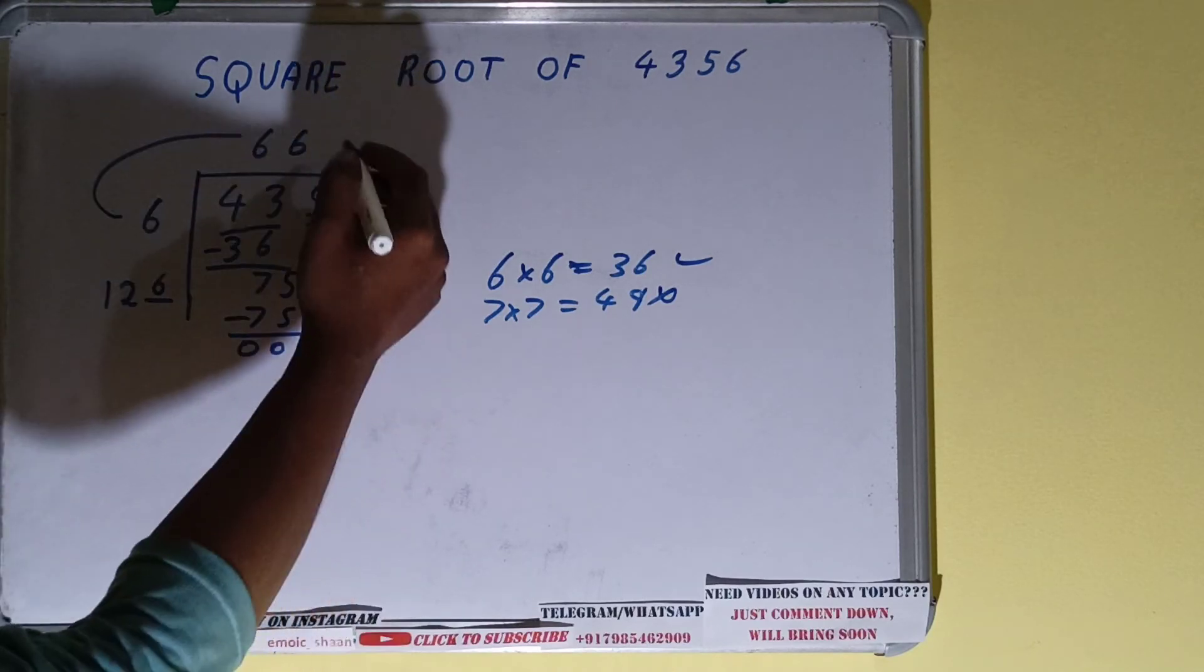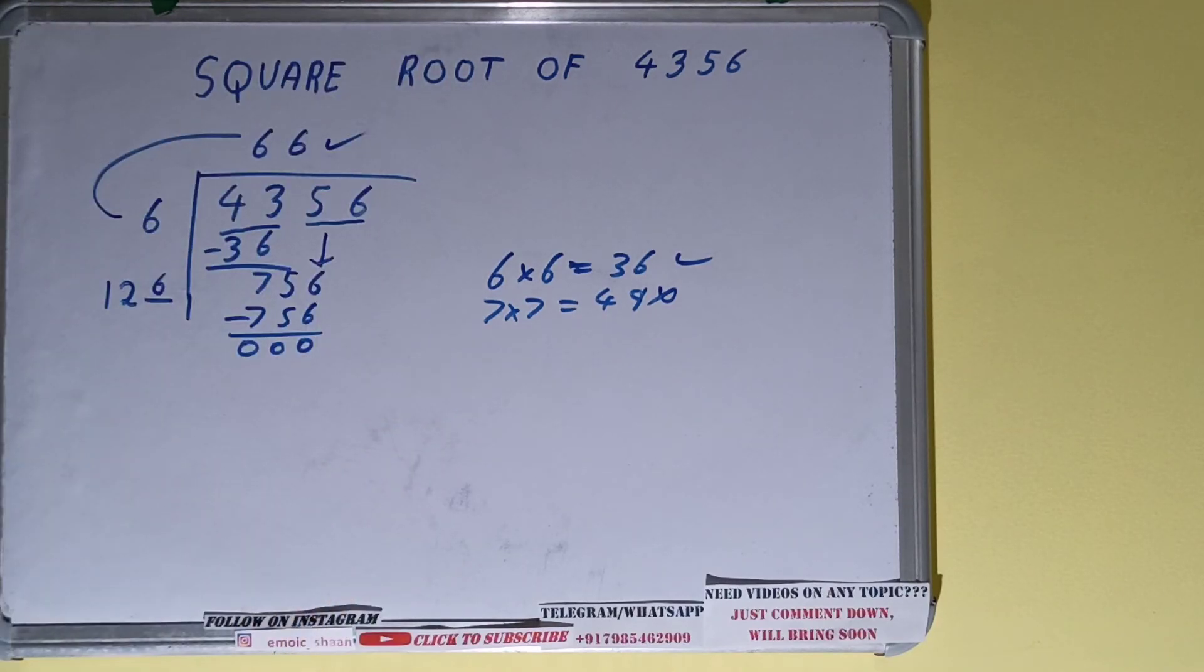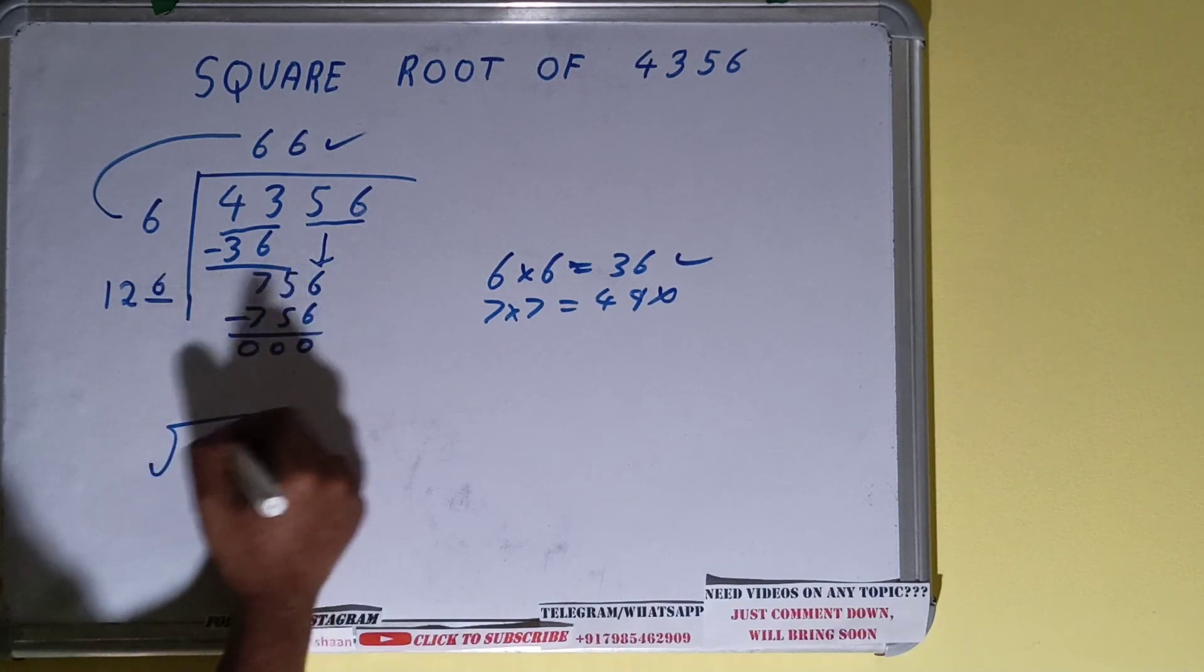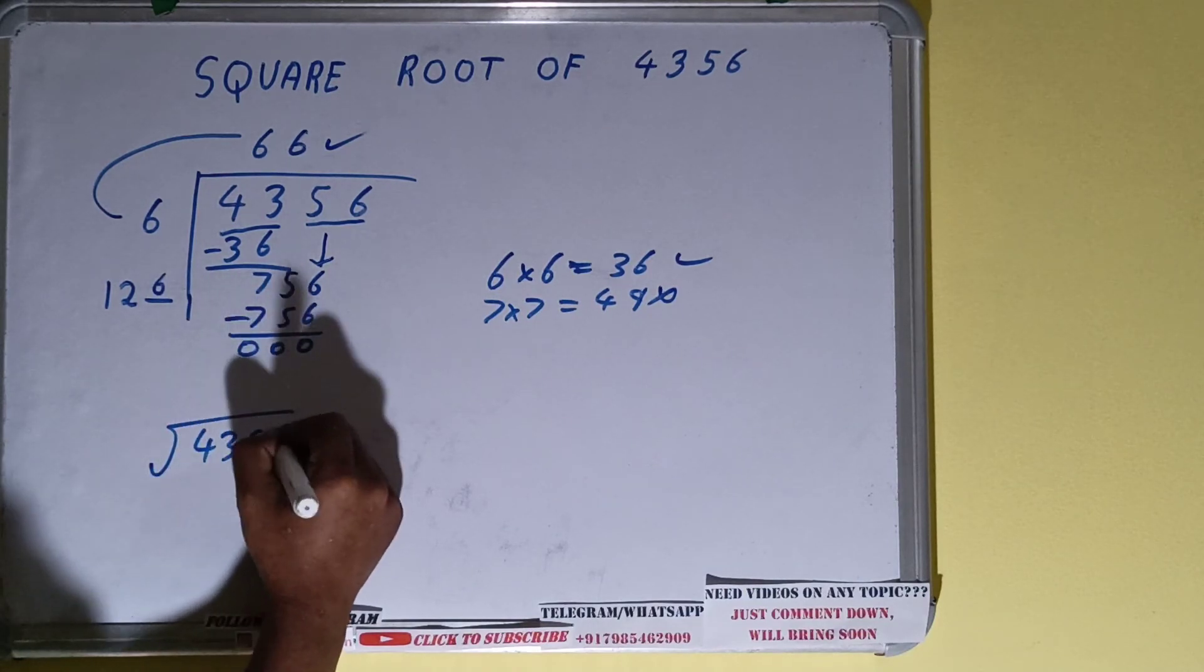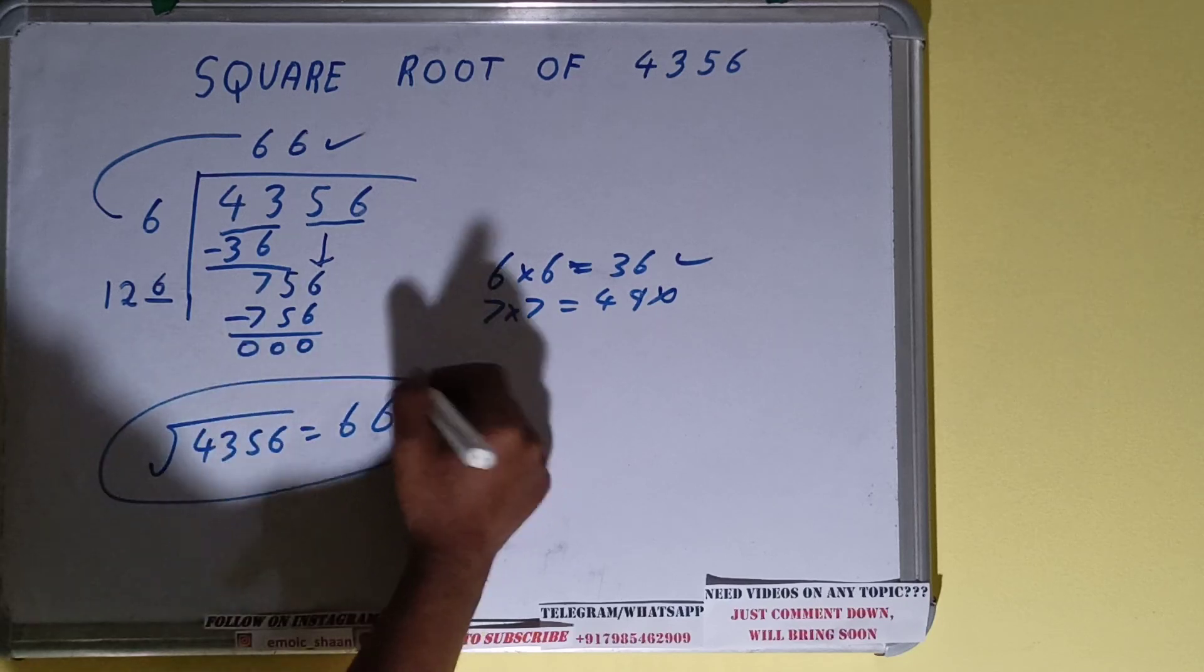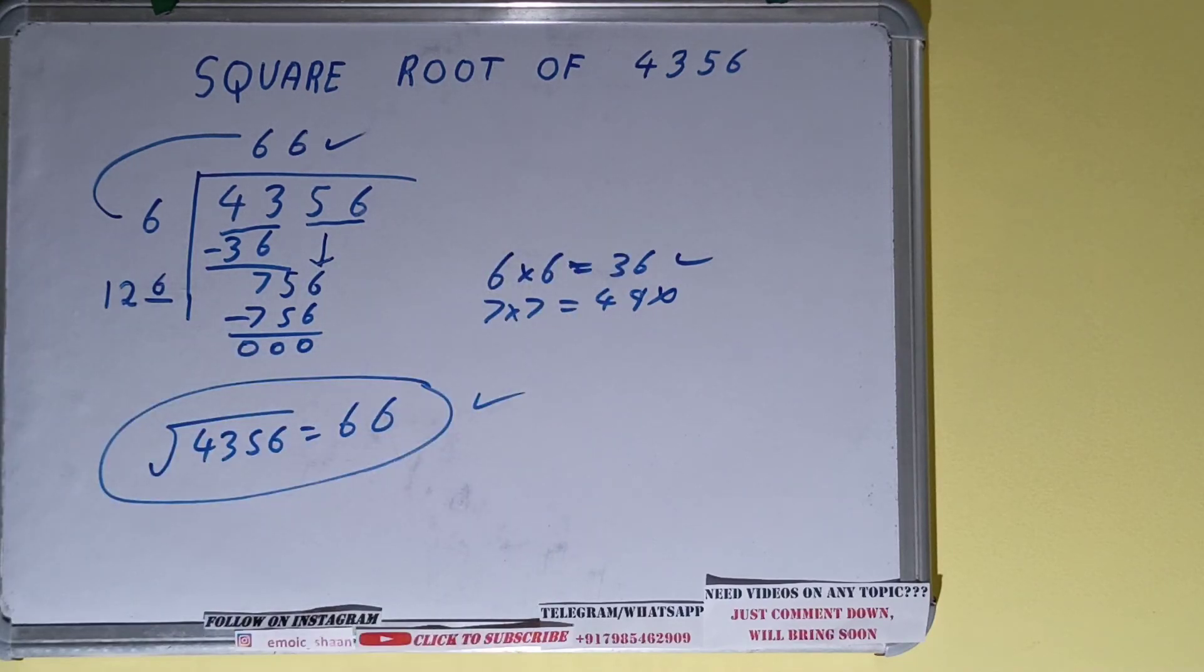And whatever is in the quotient will be our answer. Okay, so square root of 4356 is equal to 66. That's it. So this is all.